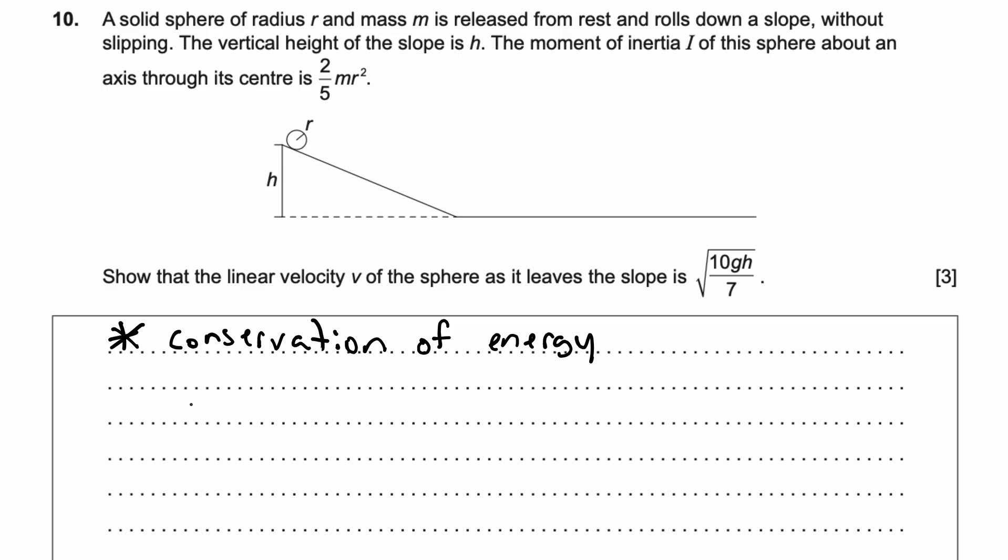it has a rotational kinetic energy which I can denote as EK, and it has a linear kinetic energy which I can denote as KE. These two kinetic energy components added together will equal the potential energy, and this is what the conservation of energy principle states. Your kinetic energy is going to be equal to your potential energy because it is being converted.